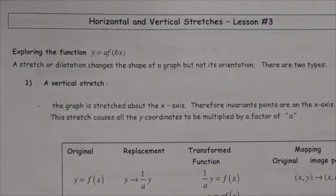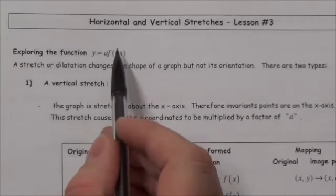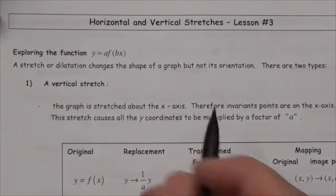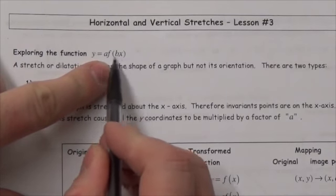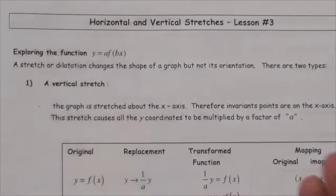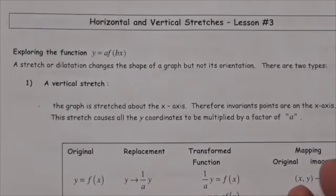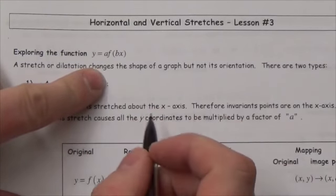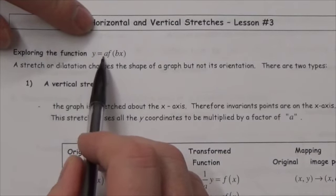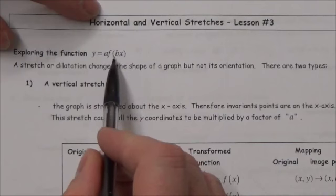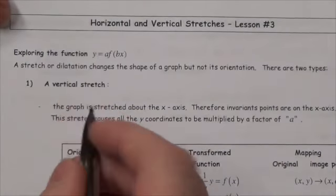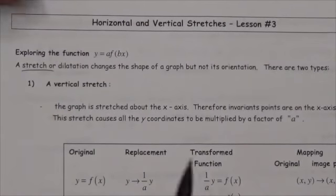A lot of what we see in this chapter is what happens when we make certain changes to function notation. When we talked about translations, we were adding values to the independent variable inside the function, or adding values to the dependent variable outside. Now we're going to look at what happens if you multiply the entire dependent variable by a value — the 'a' outside — or multiply the independent variable by a constant.